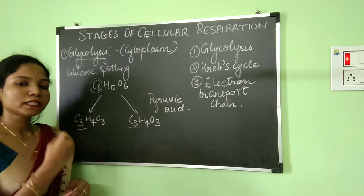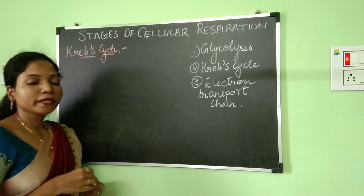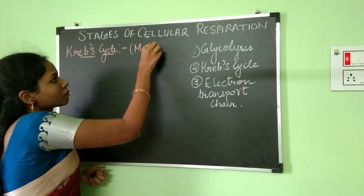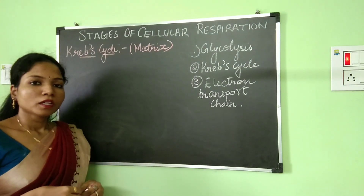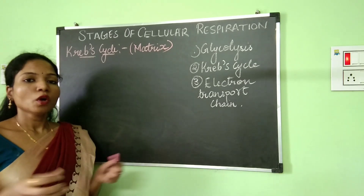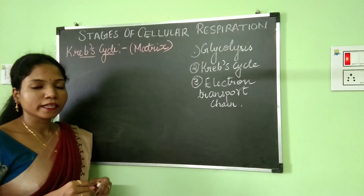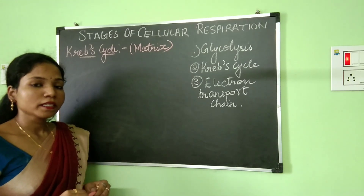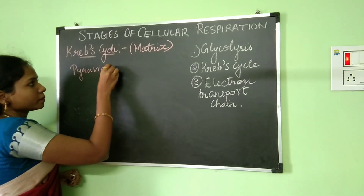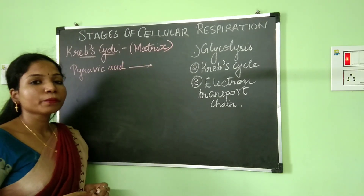Now let's go on to the next stage of cellular respiration, which is Krebs cycle. Krebs cycle takes place in the inner mitochondrial matrix. Matrix is the space inside the mitochondria which is filled with enzymes, ribosomes, and related structures. Inside the matrix, Krebs cycle is going to take place. During Krebs cycle, the pyruvic acid or pyruvate produced during glycolysis is going to be oxidized.